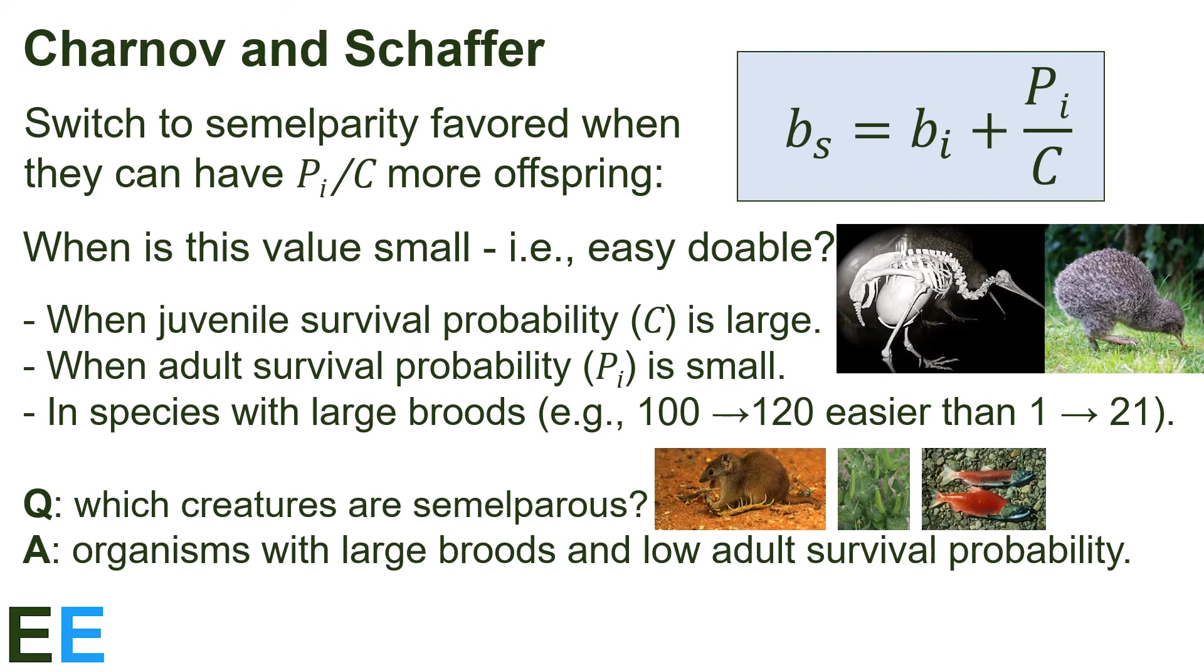Salmon have to make a long journey up a river which is full of danger, so their P sub I value would be low and the eggs they lay are so small that making enough for semelparity to work is possible even with the low juvenile survival probability. On the other hand, sea turtles are very unlikely to turn semelparous anytime soon. Even though they lay large clutches of eggs, they have a very high adult survival probability and a low juvenile survival probability, so the number of additional eggs they would have to lay is prohibitive.